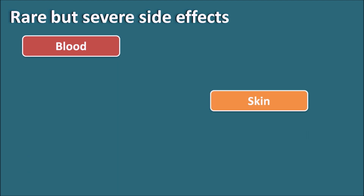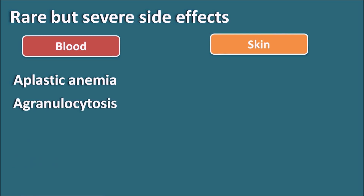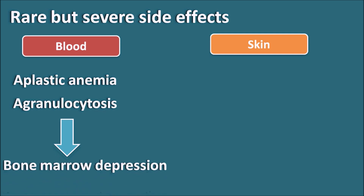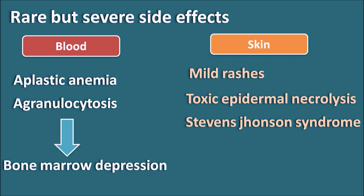Carbamazepine can affect blood and skin. On blood, it can produce aplastic anemia and granulocytosis, and at very toxic doses it can cause bone marrow depression — so it should be avoided in patients with hematological disorders. On skin, it can cause rashes, and in susceptible patients it can produce severe reactions like toxic epidermal necrolysis and Stevens-Johnson syndrome. These hypersensitive reactions are particularly observed in patients with the HLA-B gene (human leukocyte antigen B gene).